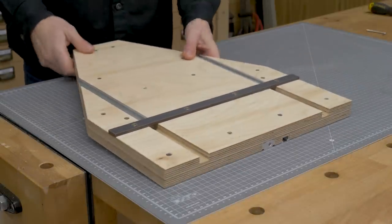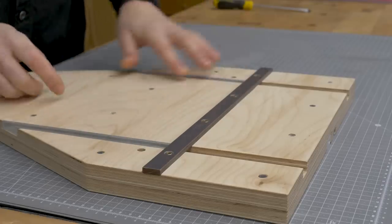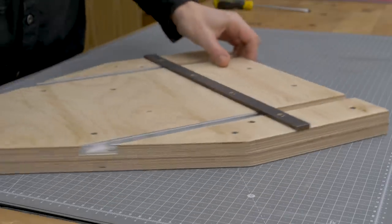I screwed a slider on the bottom of the jig so that I can insert it into the miter channels of the bandsaw and router table.